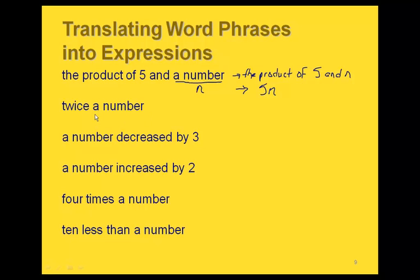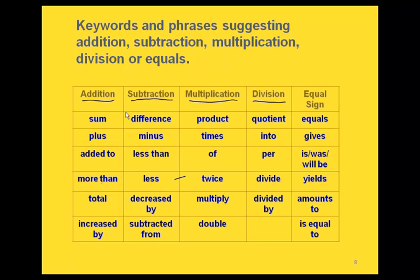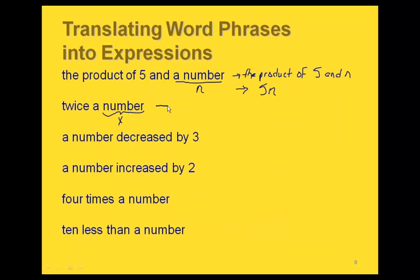'Twice a number' — let's use x. Twice is in the multiplication column and means multiplying by 2. So twice a number translates to 2 times x, written as 2x.